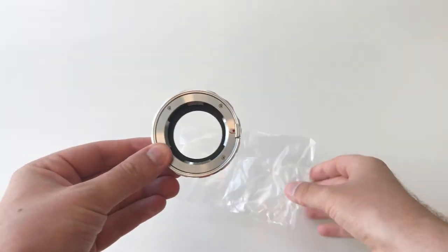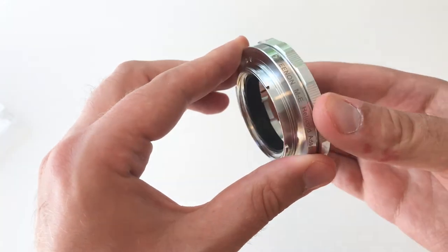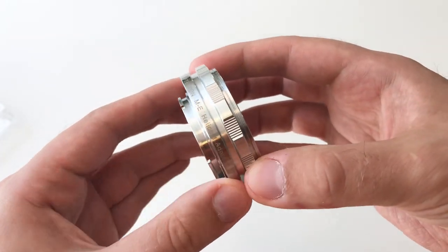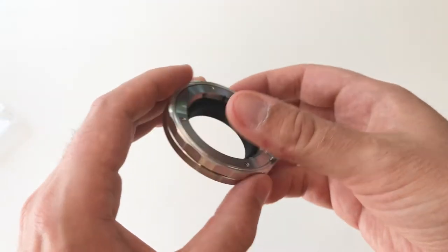The reason for this is simply that you can twist the adapter to extend it by a few millimeters. This one extends by 6 millimeters, which gives you quite a big difference in minimal focusing distance.